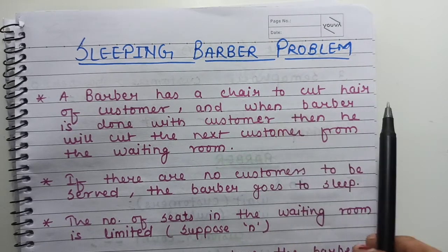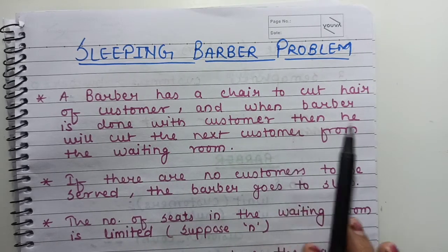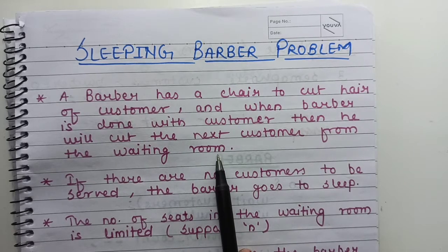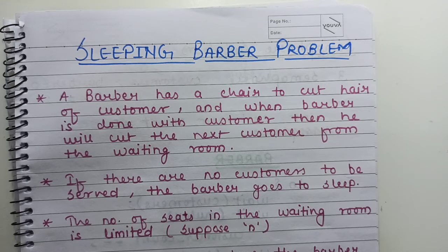A barber has a chair to cut the hair of a customer. When the barber is done with a customer, it will call the next customer from the waiting room. So we have one waiting room and one barber room. In the barber room, there is one chair where the barber cuts hair.